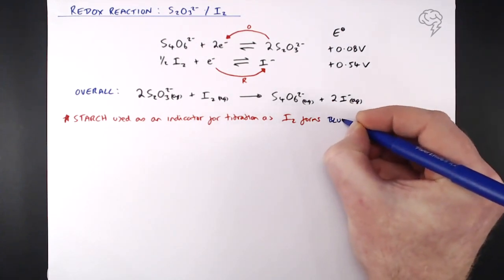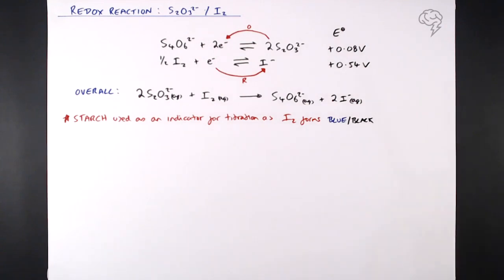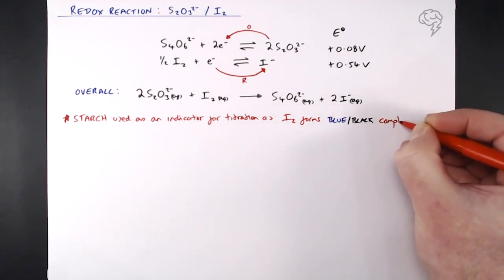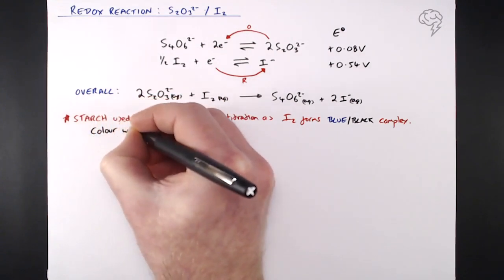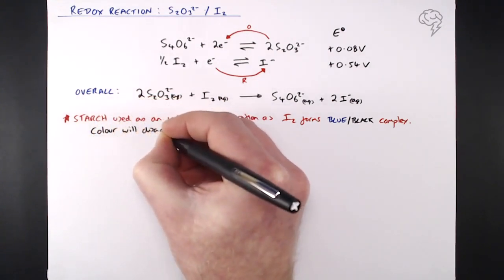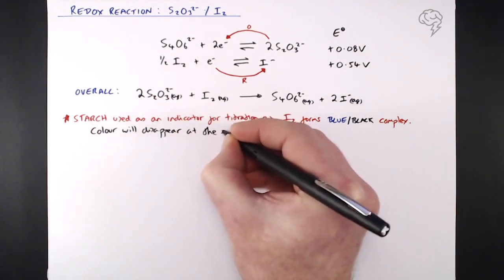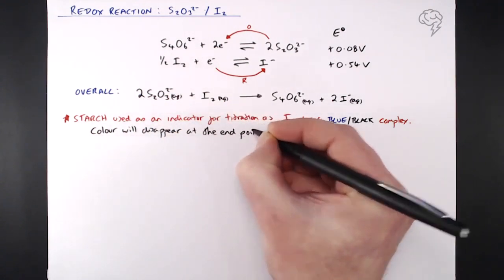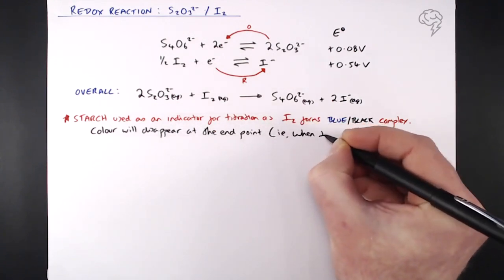So iodine forms a blue-black complex with starch. Now that color, if you put some starch into your conical flask during the titration, that would disappear at the end point. So at the point where all that iodine has been used up, there's no iodine left, then that blue-black color will have disappeared. So starch is used as an indicator, it indicates when all the iodine has run out.